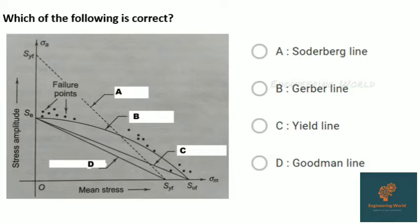The next question: which of the following is correct? Line A is the yield line. B is the Gerber's parabola, also known as Gerber's line. The straight line C is the Goodman's line, and this is the Soderberg line, which is D. So the correct answer is B, Gerber's line.